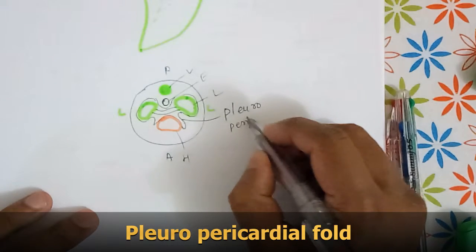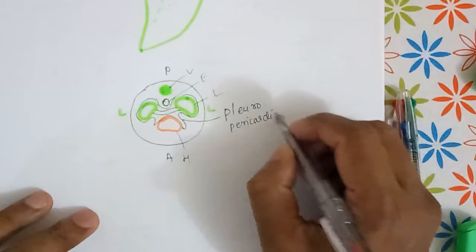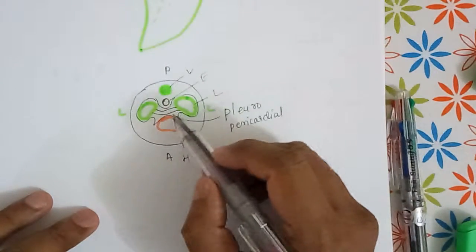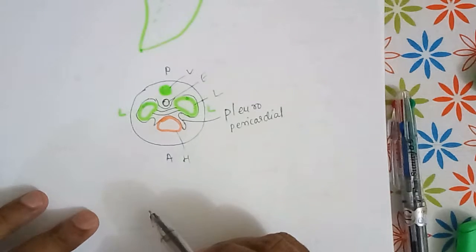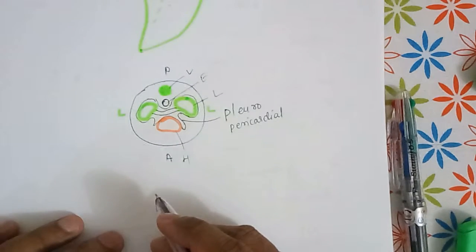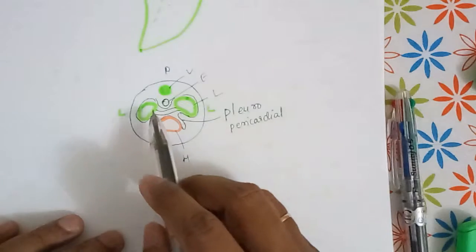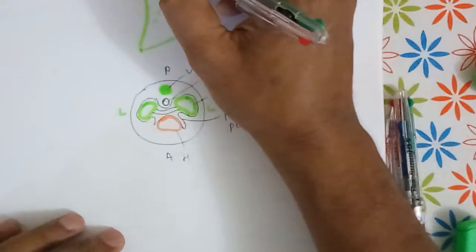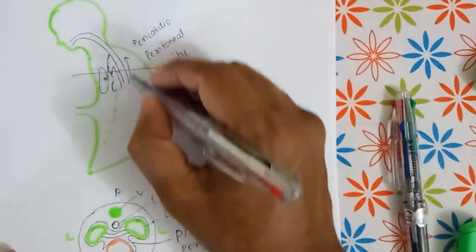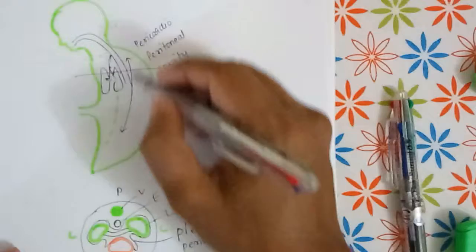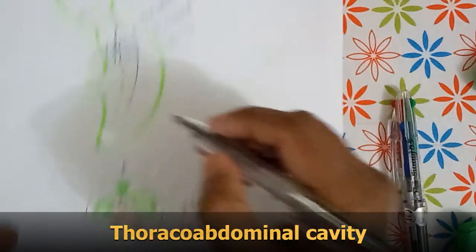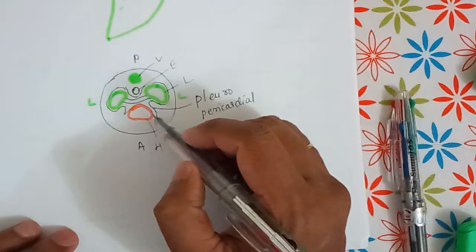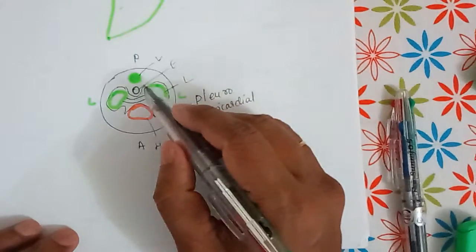This fold is called the pleuro-pericardial fold, and there is one more fold called the pleuro-peritoneal fold. These folds are developed because of the developing lung, which compromises the cavity communicating between two regions: thorax and peritoneum. The fold of membrane which covers the lung is the pleural membrane.